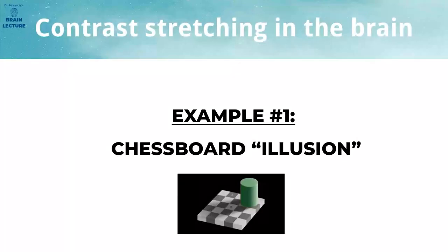In this first example, we will look at the famous chessboard optical illusion. This and the following examples are all well known and you can find them in many places on the internet. In this video, I just want to explain what is really hiding behind these illusions — that behind all of them is nothing more than contrast stretching, which is no error, but an intentionally implemented procedure in the brain that we may call preprocessing of the image for further use.